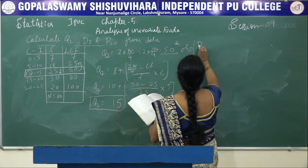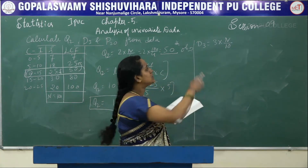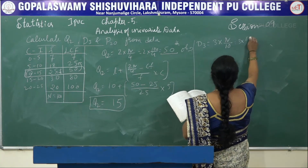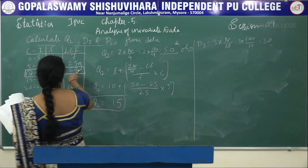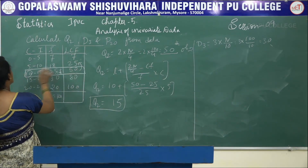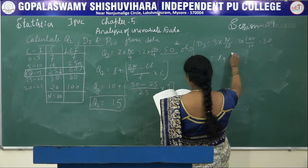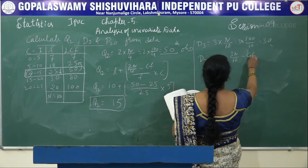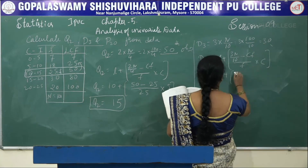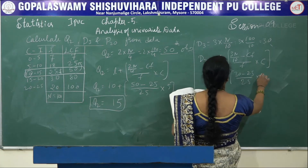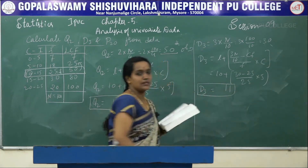To find D3: 3n/10 = 3×100/10 = 30th observation, which falls in the class 10–15 (LCF = 50). Formula: D3 = L + (3n/10 − CF)/F × C = 10 + (30 − 25)/25 × 5 = 11. So D3 = 11.